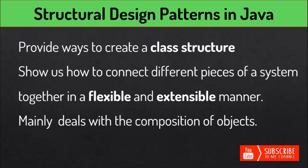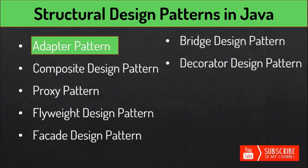Next are structural design patterns. They provide ways to create a class structure — for example, creating a large object from smaller ones using inheritance and composition. They show us how to connect different pieces of a system together in a flexible and extensible manner, and guarantee that when one of the parts changes the entire application structure does not need to change. They deal with the composition of objects.